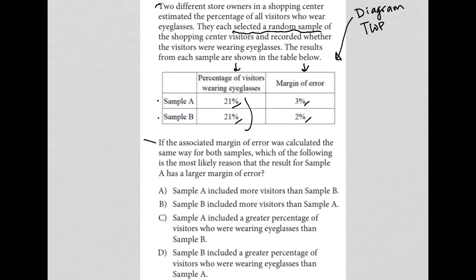Answer choice A says sample A included more visitors. I don't think so. I really think answer choice B is where the answer is, where it says sample B included more visitors. And that's why it got closer. It has a smaller margin of error because it included more visitors. So it got closer to the actual value.